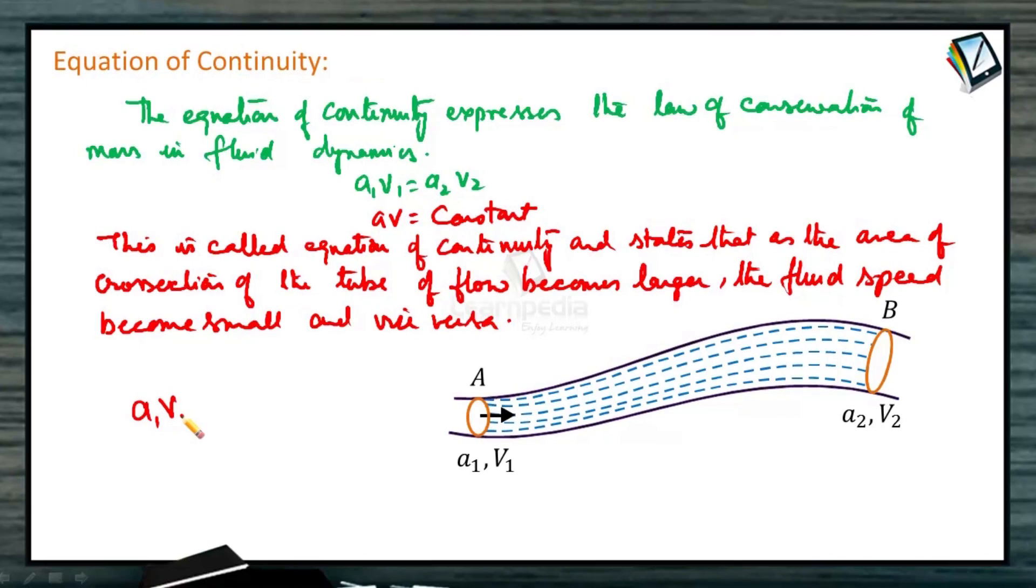These are some illustrations showing A1V1 should equal A2V2. Area of cross-section times velocity must always be equal. This product A1V1 equals A2V2 is also called the law of conservation of mass in fluid dynamics.